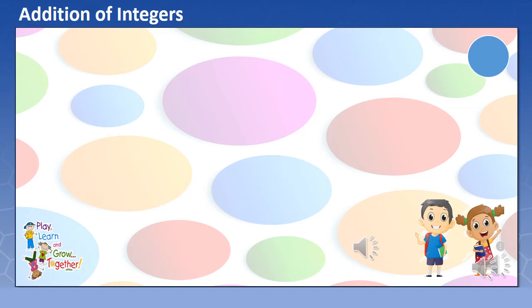First category, give me 5. For 5 seconds, find the sum of positive 15 and positive 4. Your time starts now.